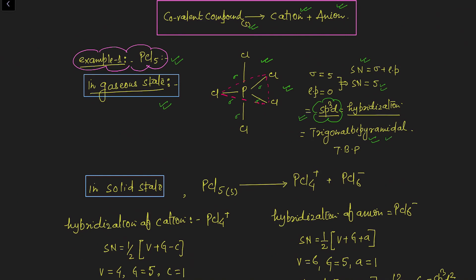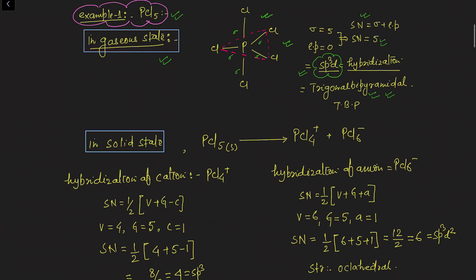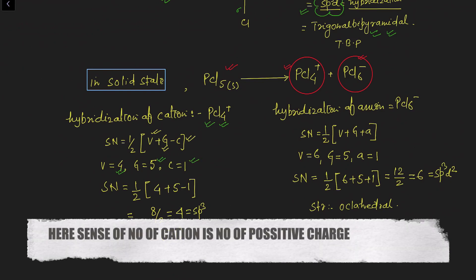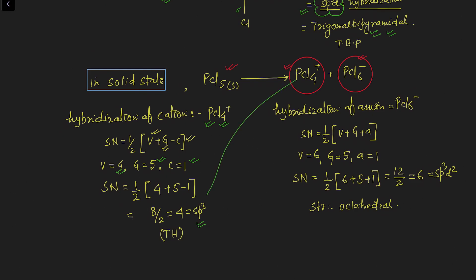The hybridization of PCl5 in gaseous state is sp3d with trigonal bipyramidal geometry — five sigma bonds and zero lone pairs. But in solid state, PCl5 consists of two different types of ions. The hybridization of phosphorus in PCl4+ cation: using the steric number formula where v = monovalent atoms (4 chlorines), g = valence electrons of phosphorus (5), and c = number of cation (1), the hybridization is sp3.